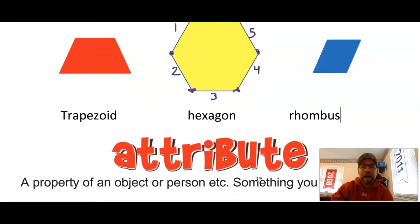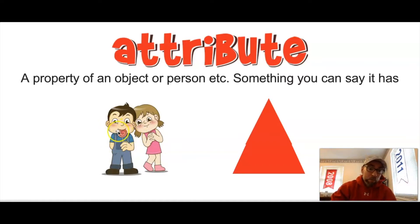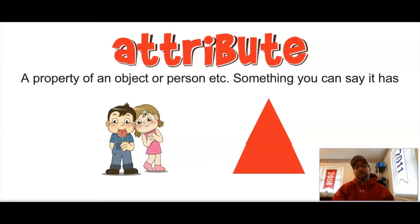All of these things we've been talking about are called attributes. An attribute is a property of an object or a person — it's something that you can say it has. Take a look at my little boy and girl. They have attributes. He's a boy and she's a girl. My little boy has dark brown hair and my little girl has light brown hair. You also have attributes — you might have brown hair, blonde hair, glasses, freckles, or rosy cheeks. They are all of the attributes that make up you.